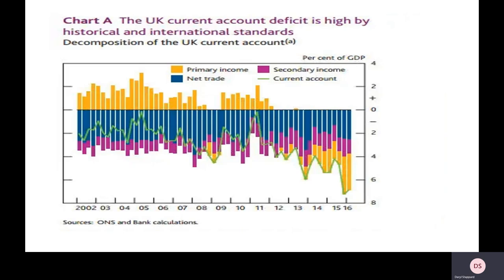Looking at the different components of the UK current account, the blue line shows trade performance — because it's below zero, the UK has a trade deficit, meaning exports of goods and services are less than imports. The yellow line shows primary incomes — investment incomes leaving our economy exceed those coming in. Secondary incomes linked to current transfers also show more outflows than inflows. Every single component of the UK current account is in deficit — a really depressing picture.